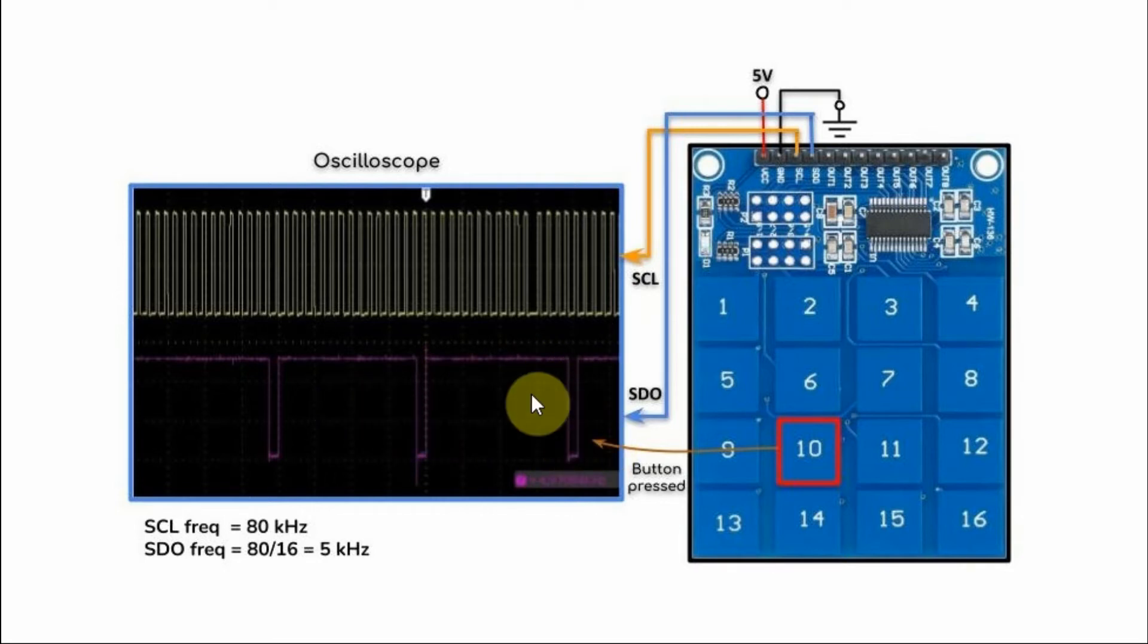And the frequency of this signal is 80 divided by 16, which is 5 kHz. We can simulate this clock signal inside an Arduino sketch by using a for loop that will loop 16 times to cover the 16 keys of the module.